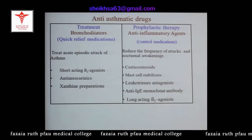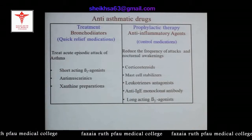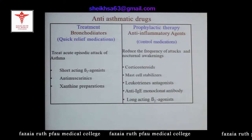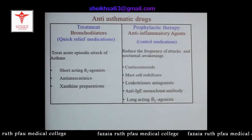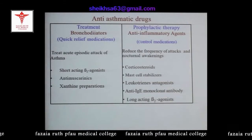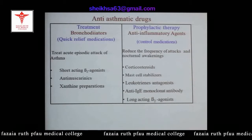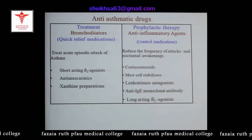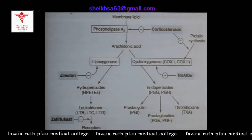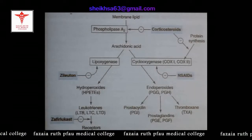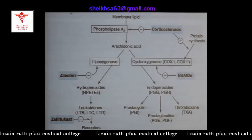The prophylaxis group includes corticosteroids, mast cell stabilizers, leukotriene antagonists (today's topic), anti-IgE monoclonal antibodies, and long-acting beta-2 agonists. We now begin today's topic. When the cell membrane is damaged, the phospholipids it contains are released.